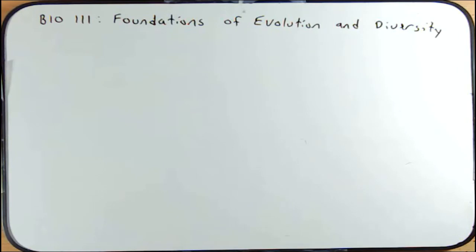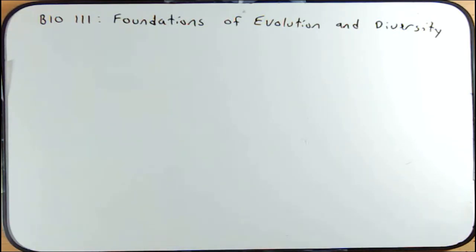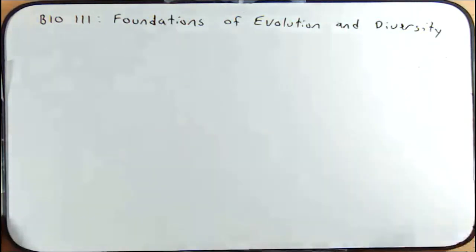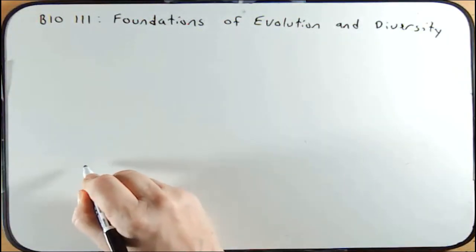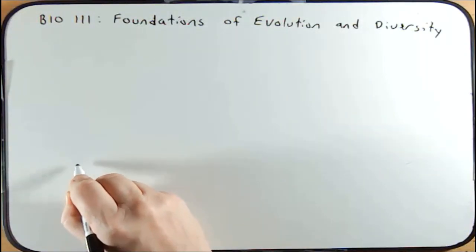Let me start with a very brief summary of what we're going to cover this semester. As the name of the course implies, we will certainly spend most of our time talking about evolution and diversity. I'm going to begin with the diversity part, and I'm going to summarize what we're going to talk about by first drawing what we call a phylogenetic tree.